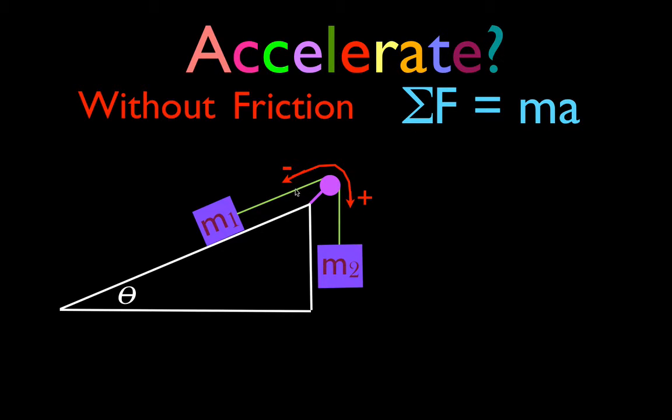Then we have a string. The string leads up the incline plane over the pulley down the other side, and at the other end we have another object M2, and we would like to know are these two objects going to accelerate?